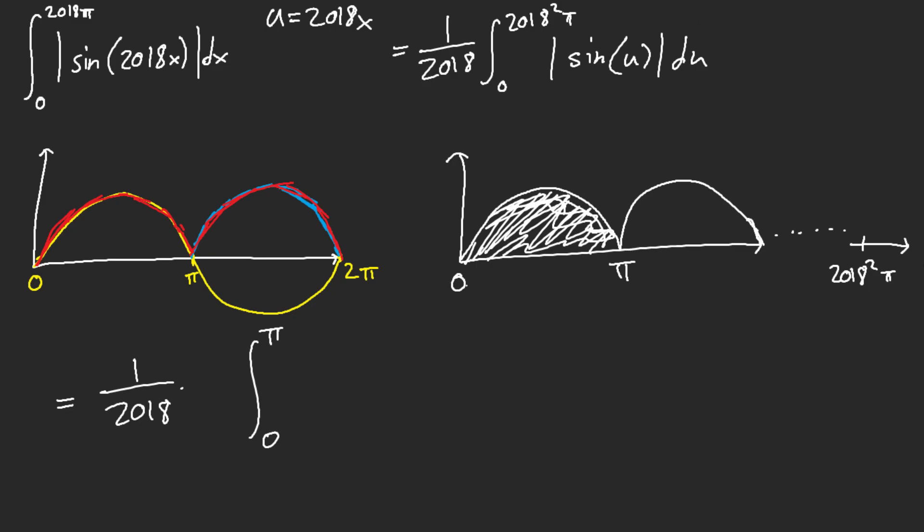We know from 0, finding the area of this whole integral is equal to finding the area of this hill from 0 to pi of sine of x, and then multiplying that with how many hills.